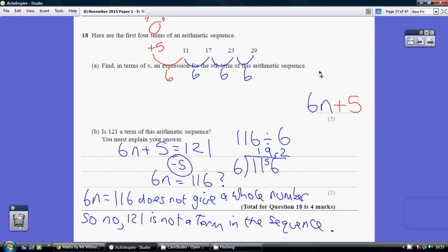Question 18. The nth term expression. Remember step one is to get the number of n's. See how much you're going up in? We're going up in sixes. So that's going to be 6n.